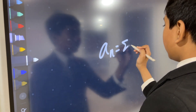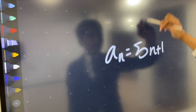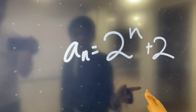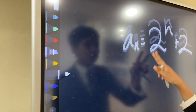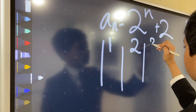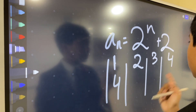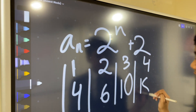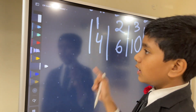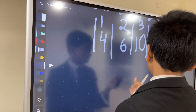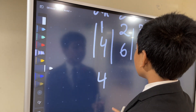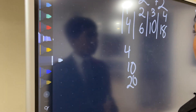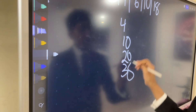For simplicity, let's use the sequence a_n = 2^n + 2. The terms are: from n=1 we get 4, from n=2 we get 6, from n=3 we get 10, from n=4 we get 18. So the series partial sums look like: first term is 4, second is 4+6=10, third is 4+6+10=20, fourth is 4+6+10+18=38.